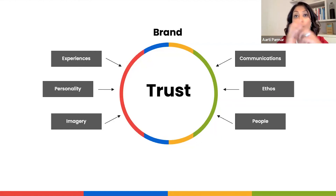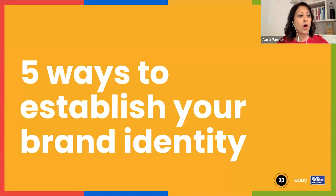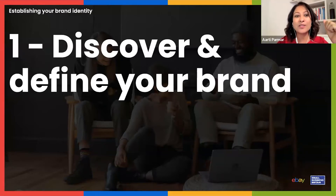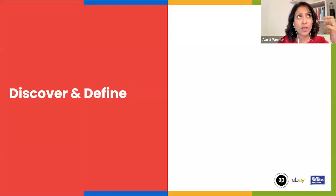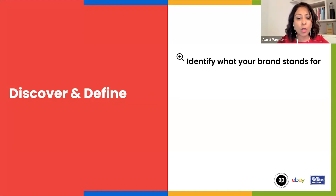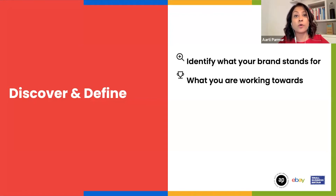So that's the importance of having a brand. Now I'm going to share five ways to establish your brand identity. Number one — and this one gets overlooked — is to discover and define your brand. You need to identify what your brand stands for, really understand why you're doing what you're doing beyond just selling your product and service, and this is a great way to help you differentiate from what others are doing.